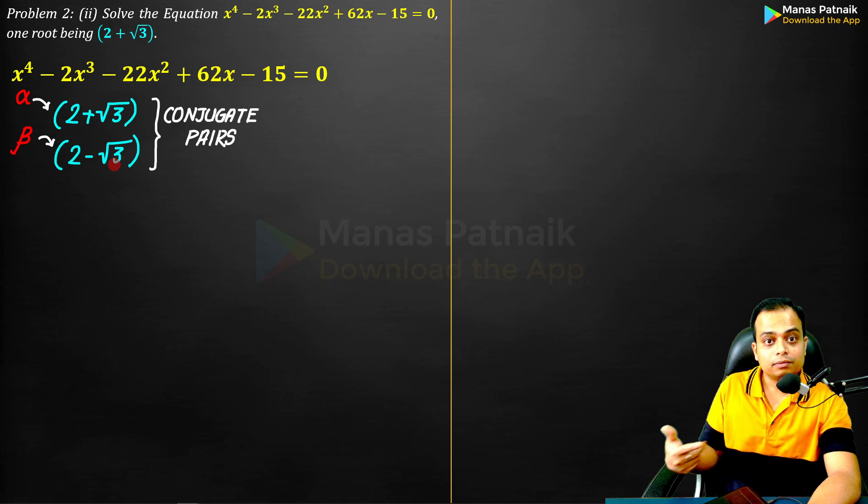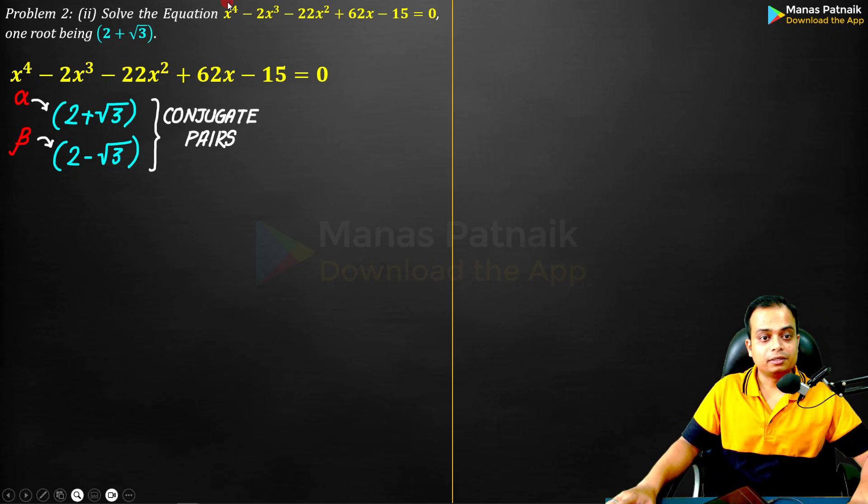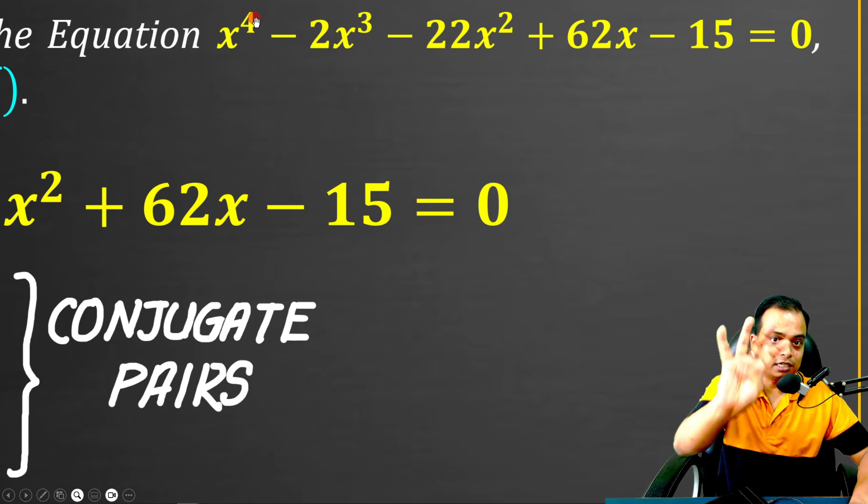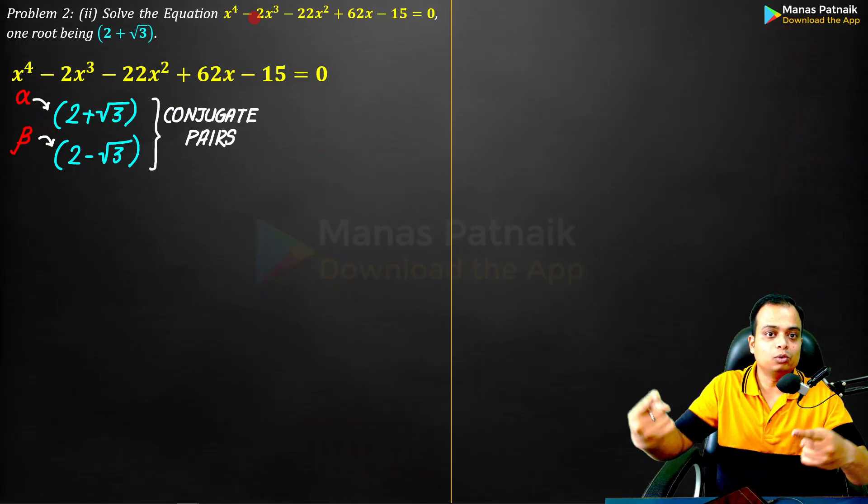What about the other two? Because this is a bi-quadratic equation. The degree n equals 4, so it has got to have as many as 4 roots. How can you work out the remaining two?